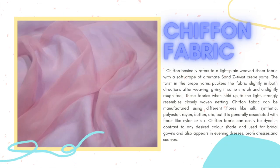Chiffon fabric. Chiffon basically refers to a light, plain-weave, sheer fabric with a soft drape of alternating S and Z twist crepe yarns. The twist in the crepe yarns puckers the fabric slightly in both directions after weaving, giving it some stretch and a slightly rough feel. When held up to the light, these fabrics strongly resemble closely woven netting. Chiffon can be manufactured using different fibers like silk, synthetic, polyester, rayon, cotton, etc., but is generally associated with nylon or silk. It can easily be dyed and is used for bridal gowns, evening dresses, prom dresses, and scarves.